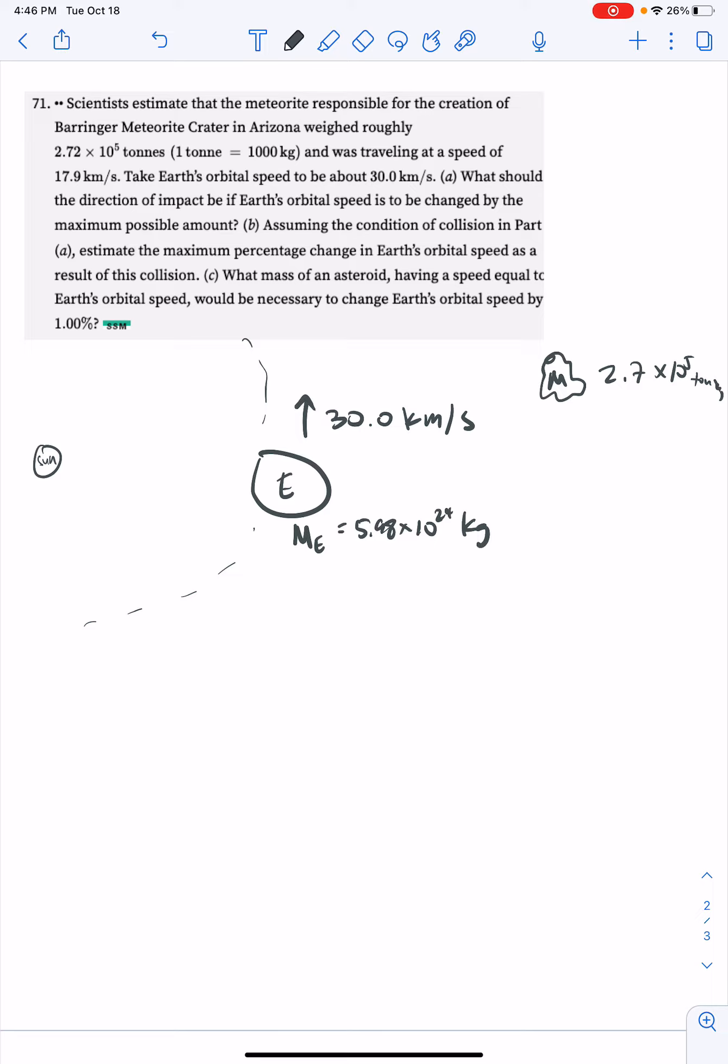Says what should the direction of the impact be if the Earth's orbital speed is to be changed by the maximum possible amount? So this question is going to conserve momentum, right? We've got a collision happening, the meteorite is going to stick to Earth once it's done.